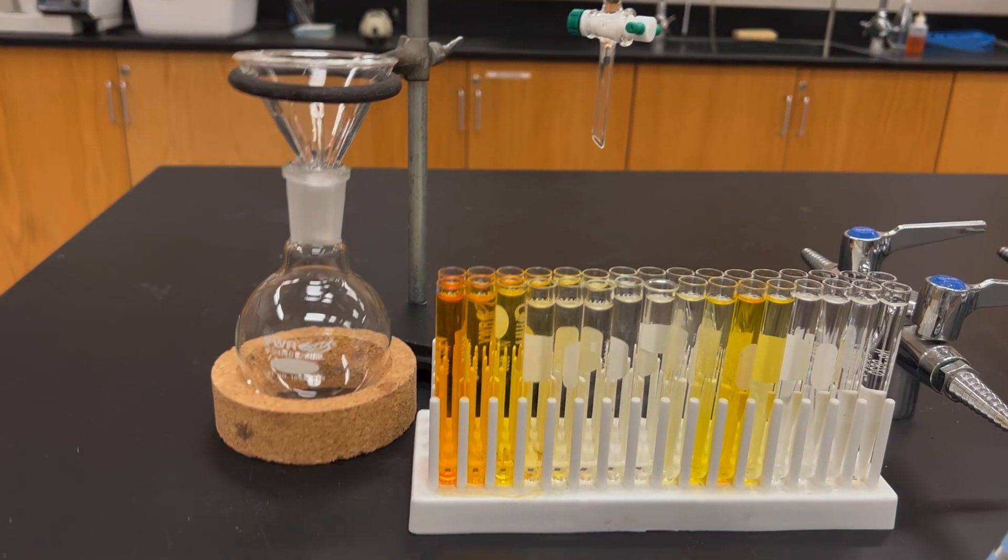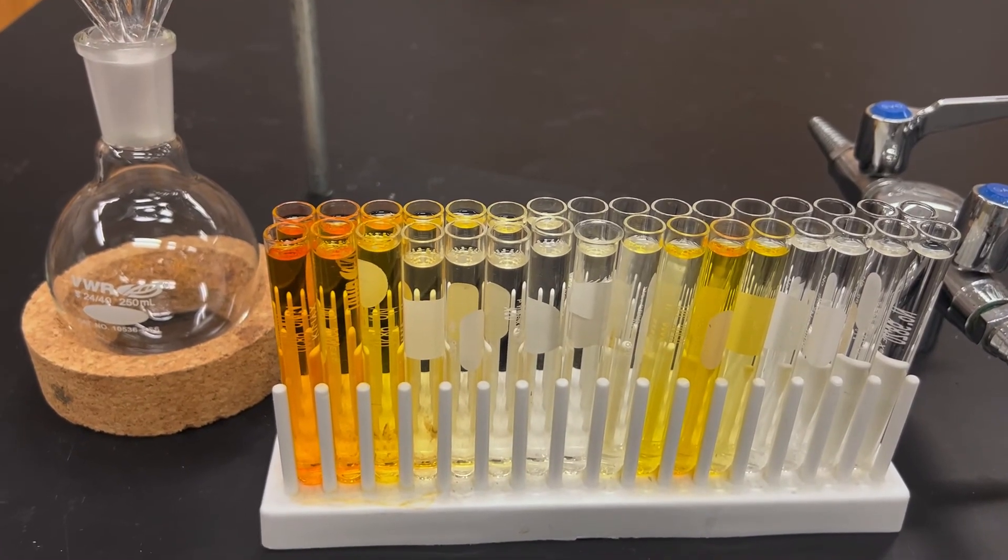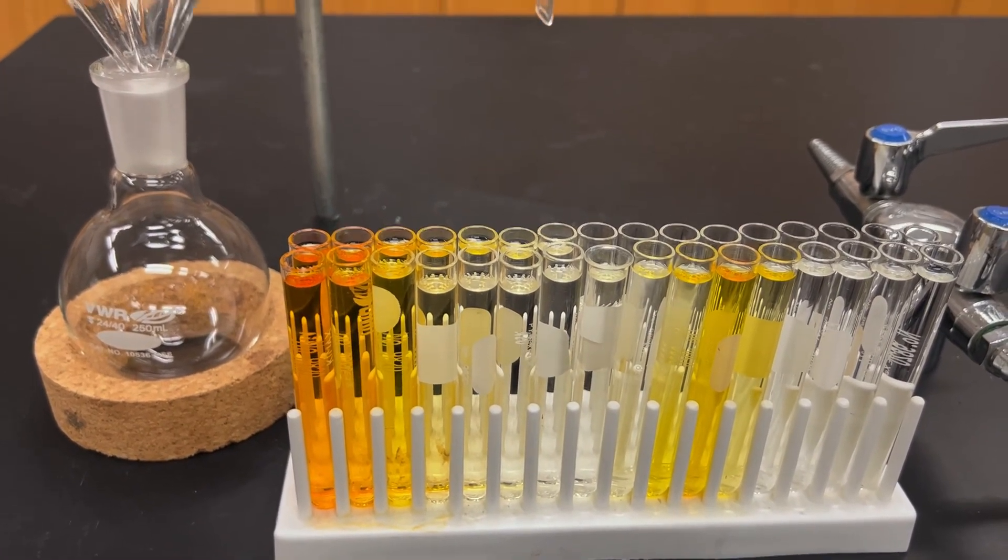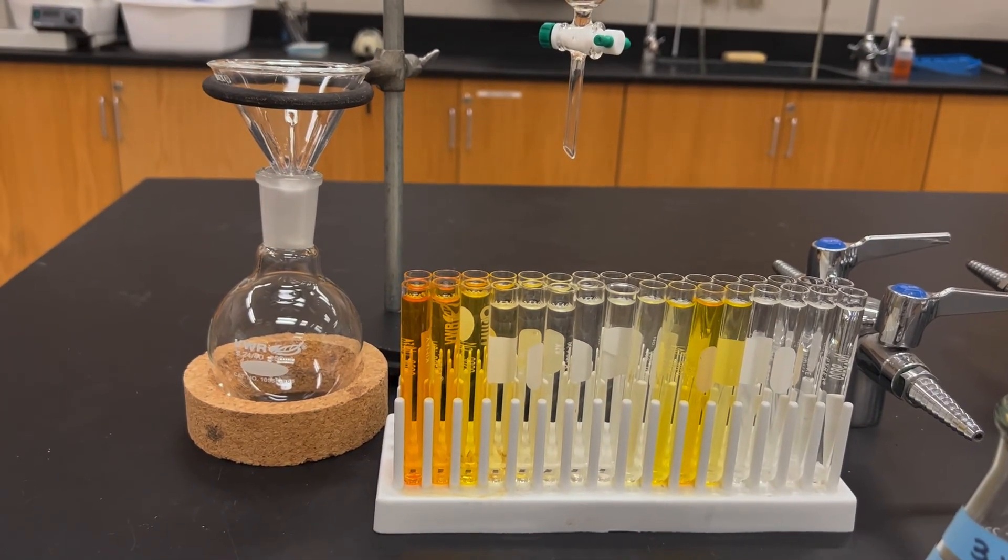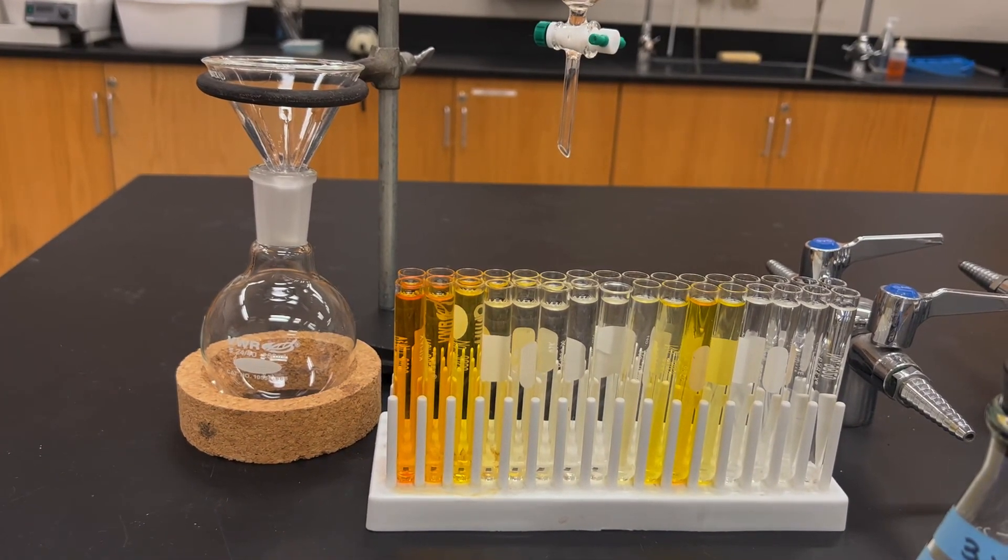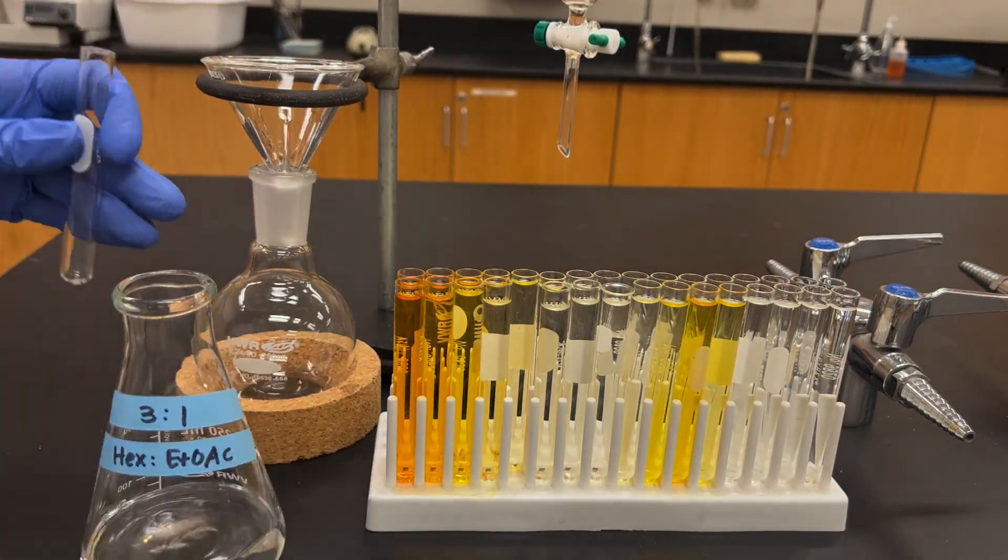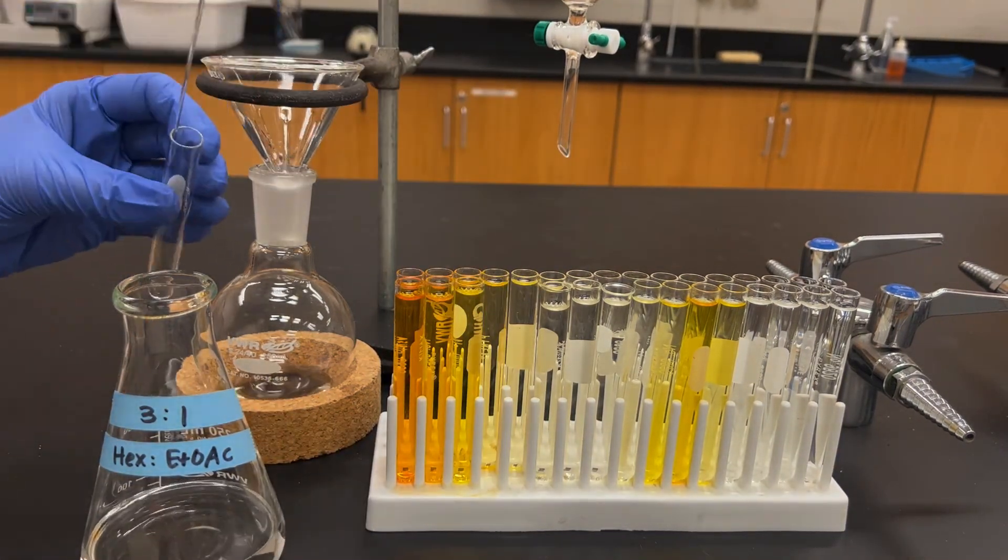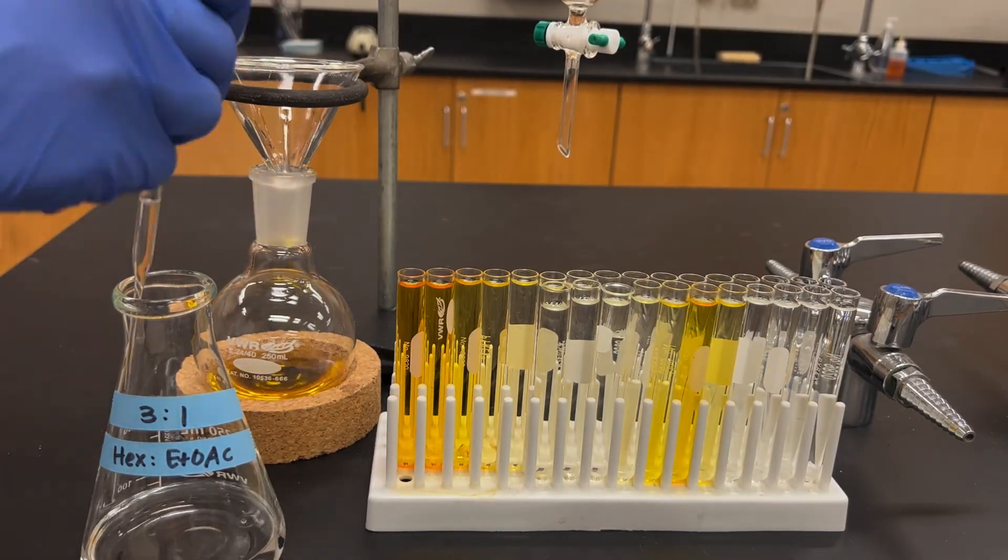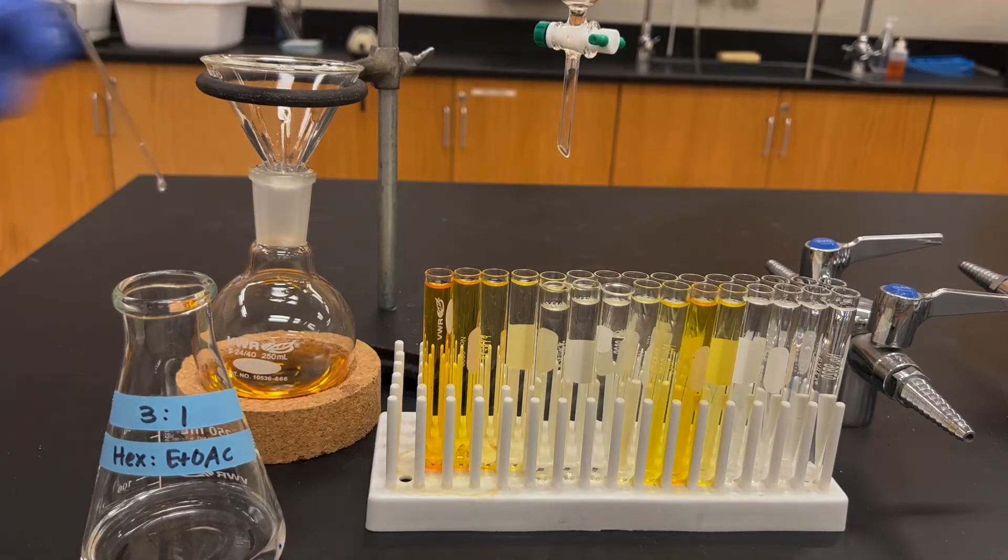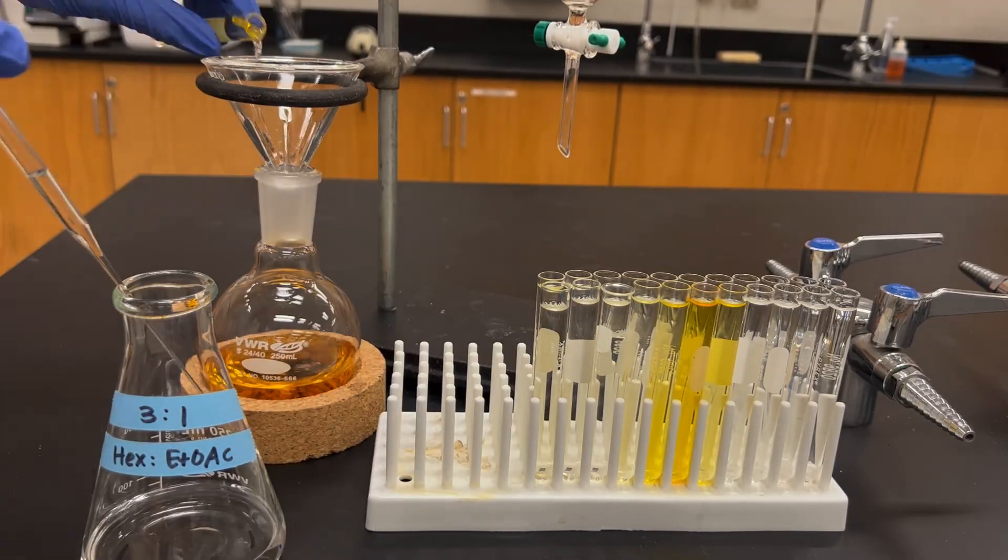After you've eluted the column it's now time to combine the fractions that have the compound that you're interested in. If you have a colorless compound you're going to have to use TLC to figure out which ones to combine, but if you had colored compounds you probably could just do this by eye. So combine the ones that you're interested in, pour those into a round bottom flask. You can rinse the test tube with a bit of the solvent that you used for the column and then eventually you can rotavap the solvent to get your compound back.